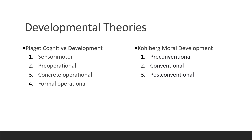For concrete operations, this is six to twelve years. Here, the thinking is literal and sometimes extremely rigid, but they are becoming more adept at using logic. The formal operations stage is twelve years to adulthood. Here, the individual has abstract thinking and hypothetical reasoning. They can draw logical conclusions, organize thoughts, problem solve, and perform deductive reasoning.